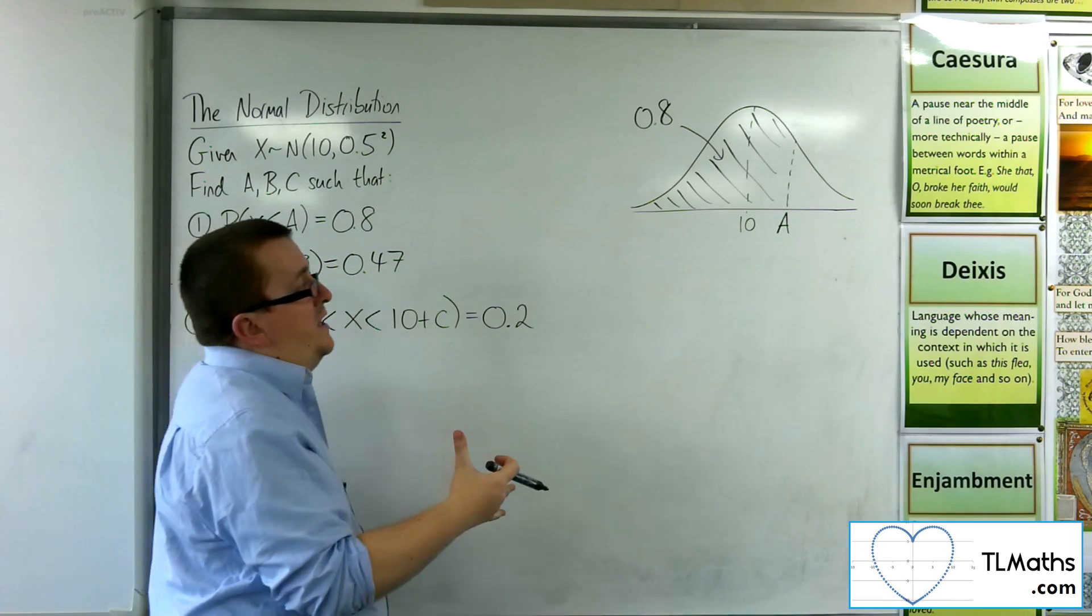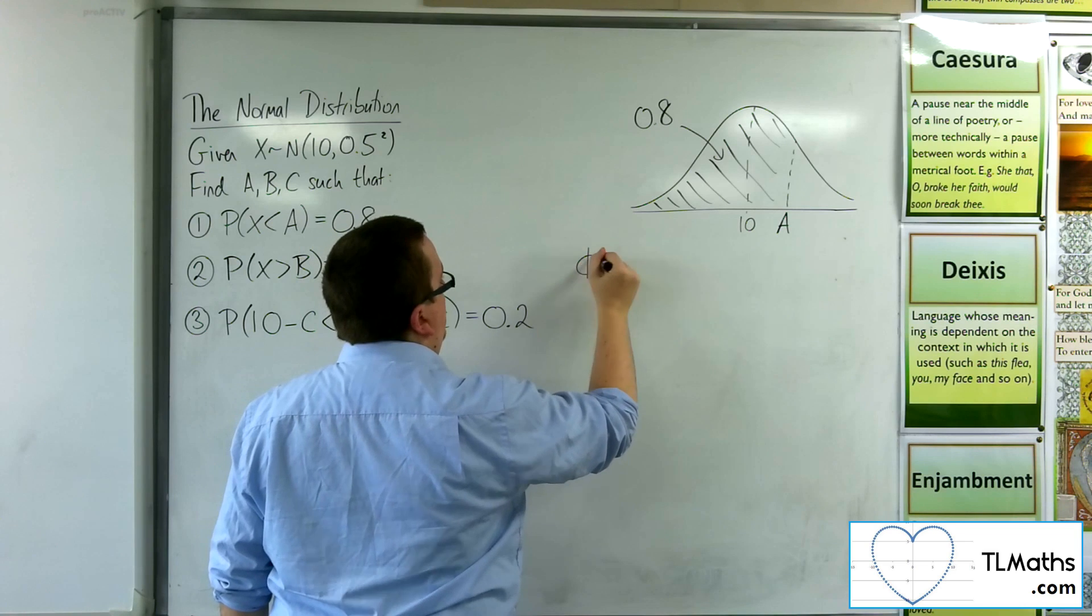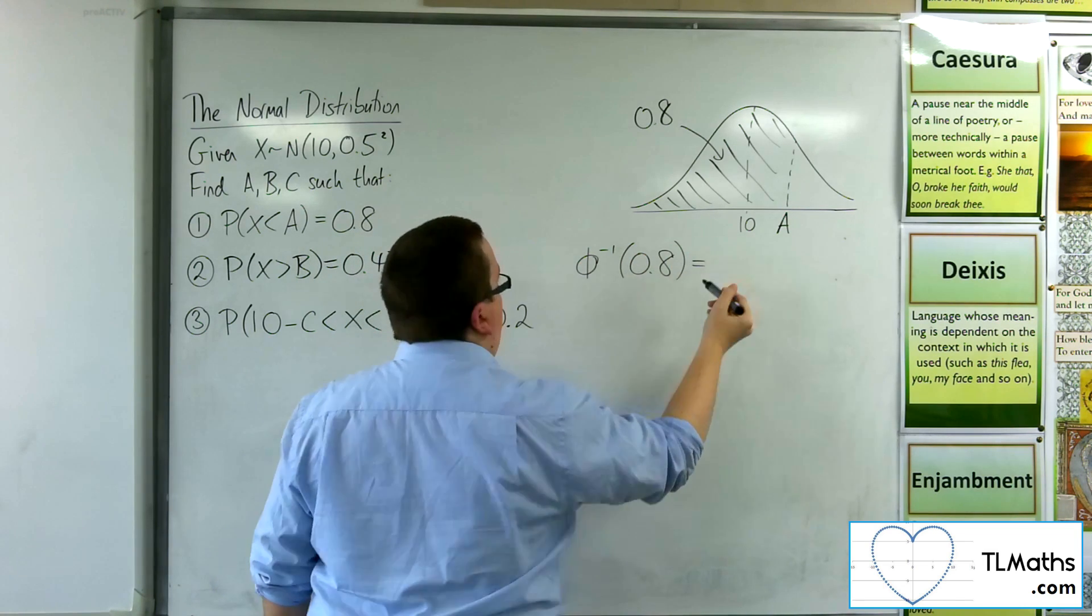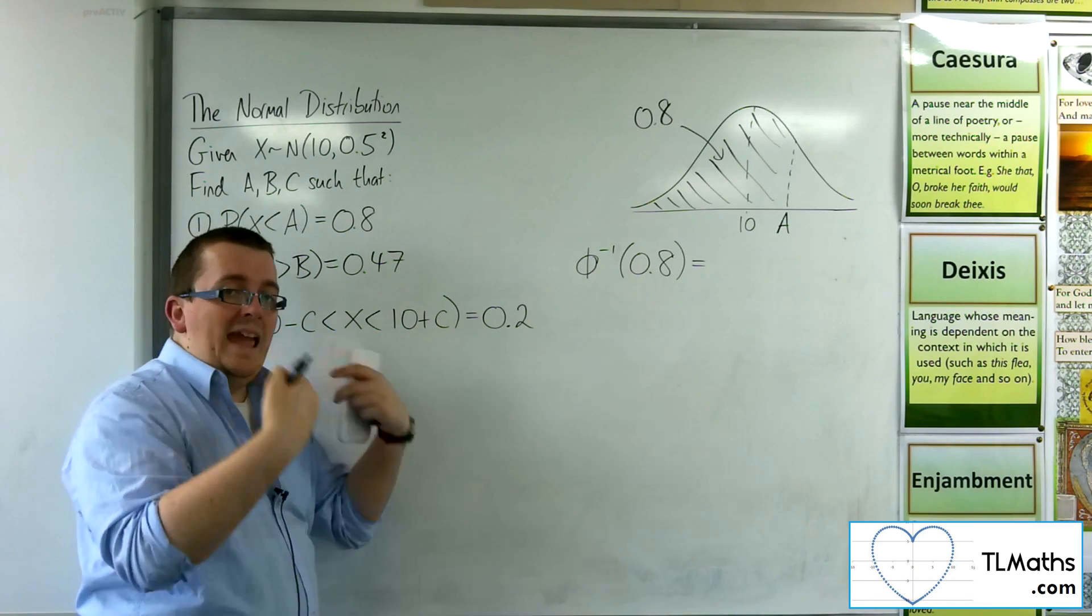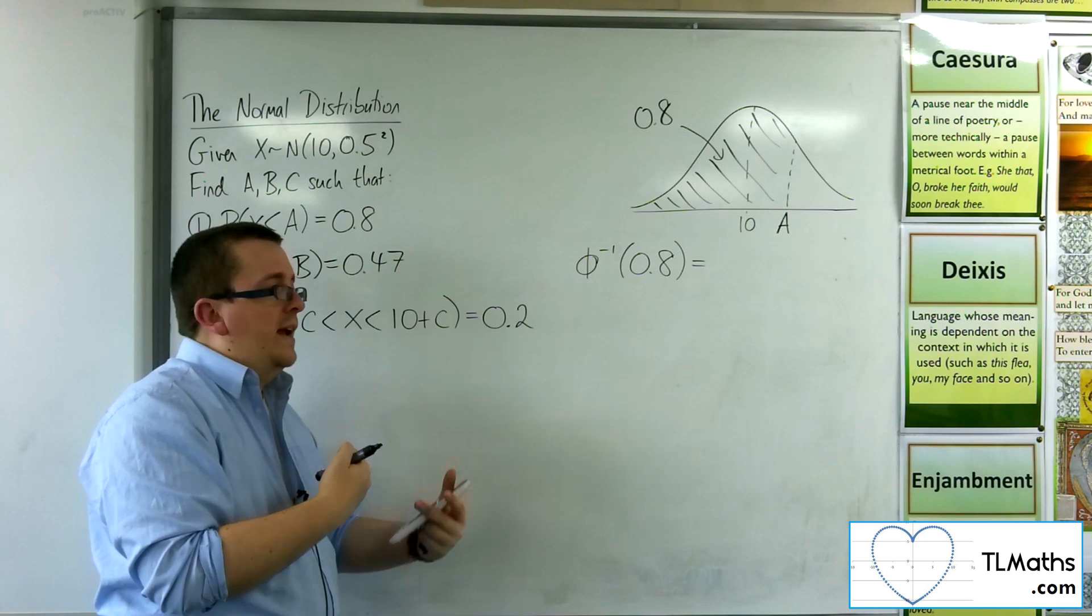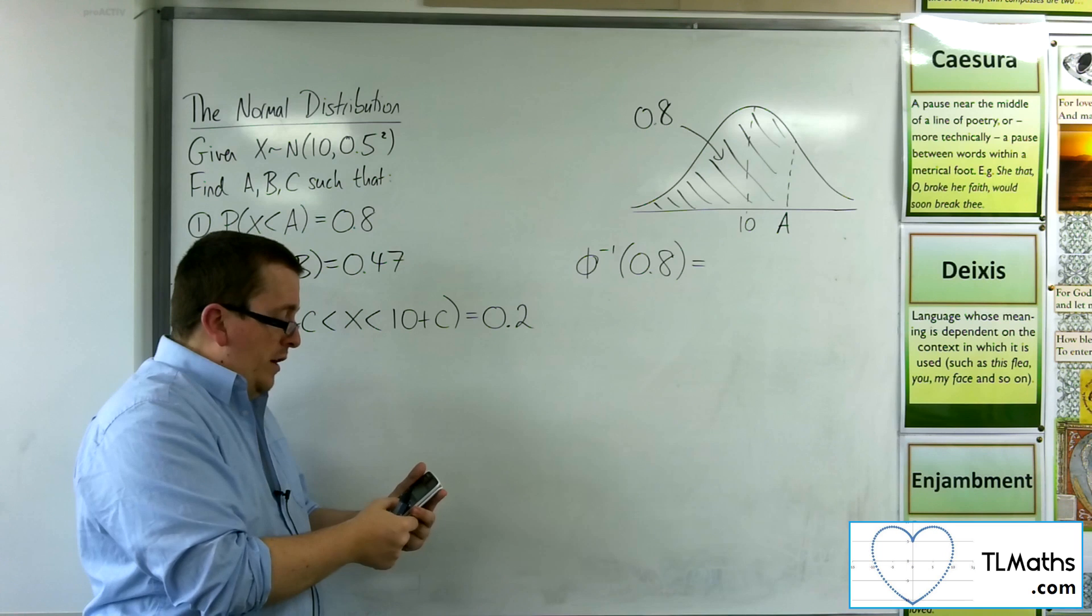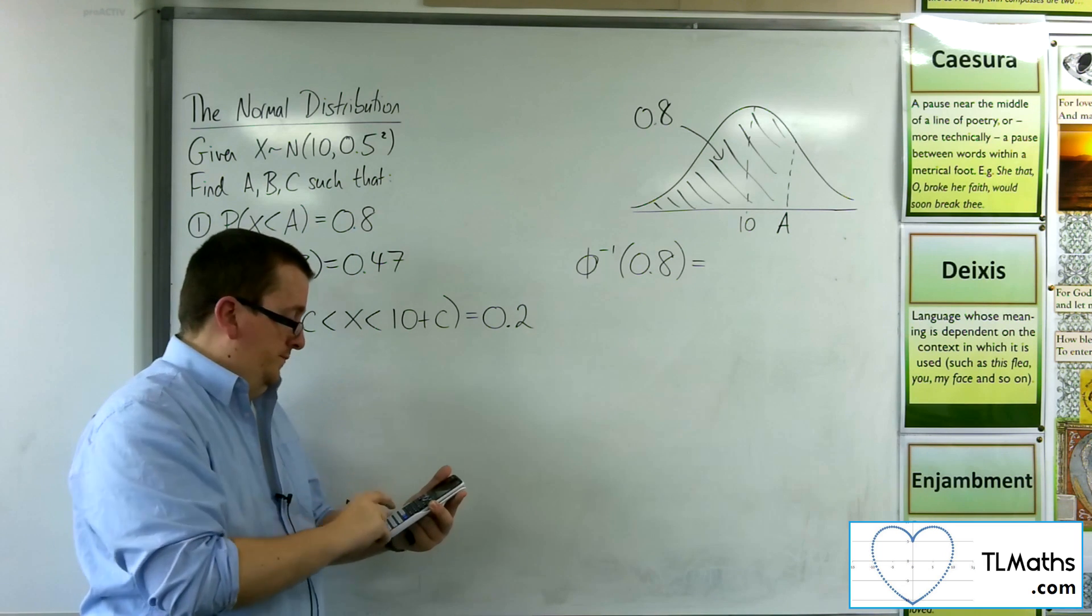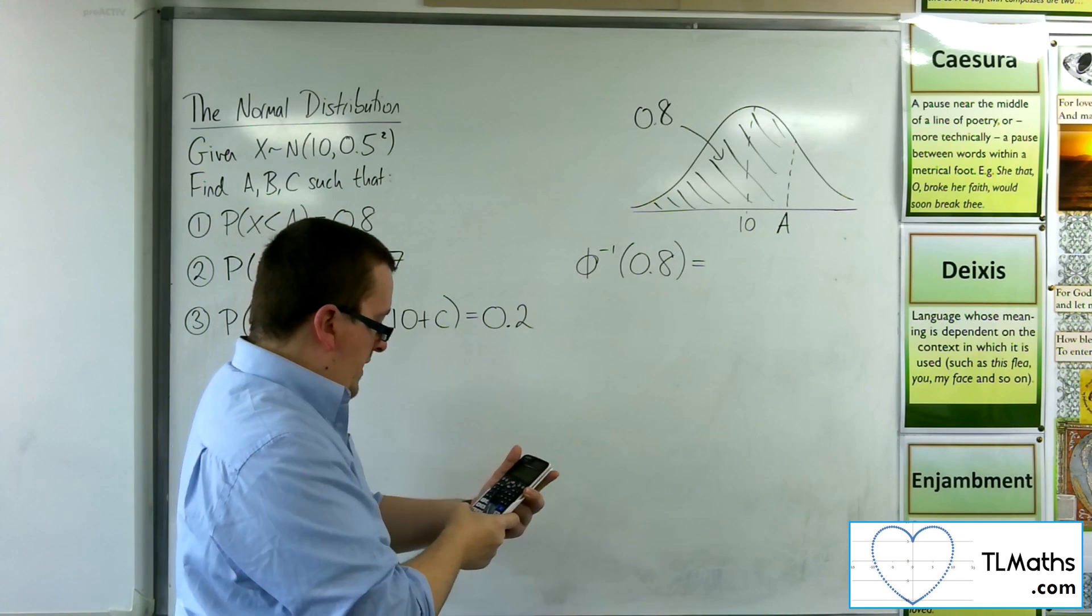So what we want to use is the inverse norm part of your calculator. So the inverse norm of 0.8. Because your calculator, when it does this, it's looking for the area to the left of a certain value. So it only works to the left. So we go to menu. And then we go to number 7 for distribution. And then you want inverse normal. So number 3. And the area is going to be 0.8.